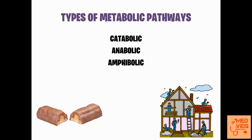Anabolic pathways are those in which larger molecules are formed from smaller precursor molecules, and we have to supply energy for these reactions to take place. Amphibolic pathways are an interlink between the catabolic and anabolic pathways.